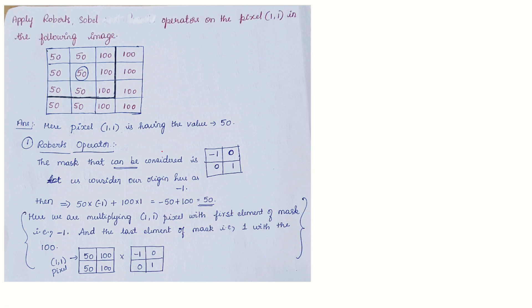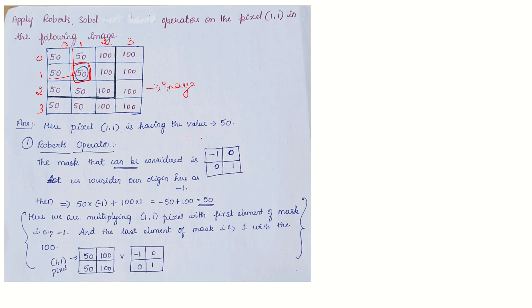This is the image we are working with. The pixel (1,1) — indexing rows and columns as 0,1,2,3 — corresponds to this particular element in the image. The value at pixel (1,1) is 50, as written here.